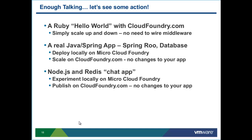The demo has three parts. First, we'll build a simple Ruby Hello World app on CloudFoundry.com and scale it up and down to show there's no need to wire middleware. Then a more complex app using Java and Spring with a database — an online bookstore developed on MicroCloud Foundry and scaled on CloudFoundry.com without changing the app. Last, a Node.js chat application — experiment locally on MicroCloud, then publish to CloudFoundry.com where participants can join the public chat.